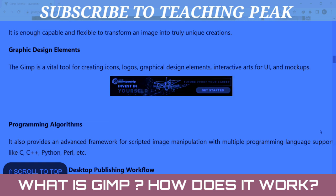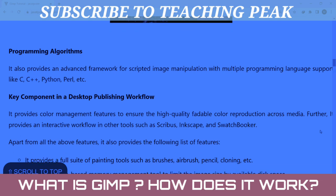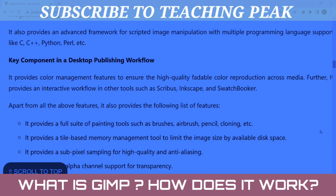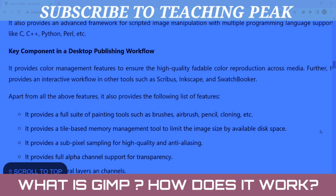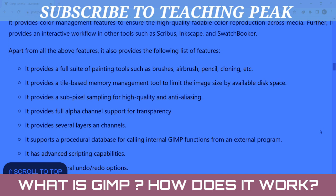GIMP is a vital tool for creating icons, logos, graphical design elements, attractive arts for UI and mockups. It provides an advanced framework for scripted image manipulation with multiple programming language support: C, C++, Python, Perl, and more. It is a key component in a desktop publishing workflow. It provides color management features to ensure high quality color reproduction across media, and provides an interactive workflow with other tools such as Inkscape and Scribus.